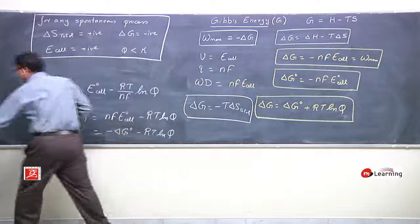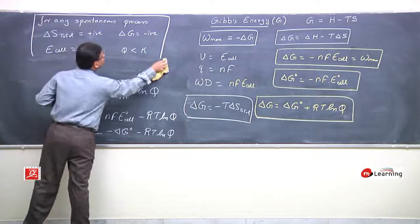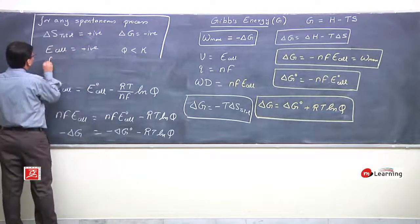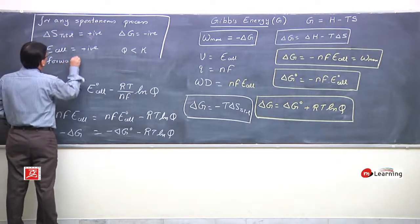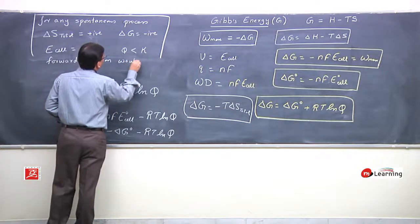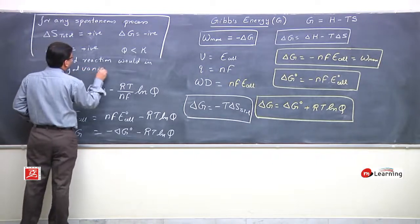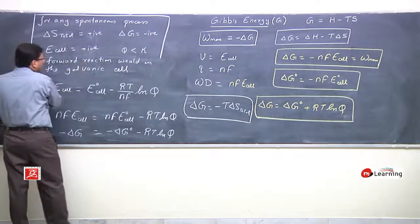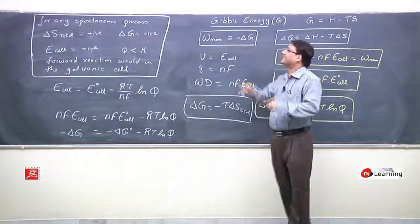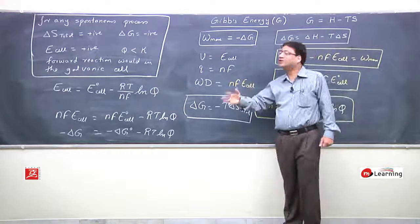In this condition, when EMF of cell is positive, the value of Q will be less than the equilibrium constant K, and we say that the forward reaction would occur in the galvanic cell. This is what I had already written earlier, but now I have re-concluded it from the thermochemistry perspective.